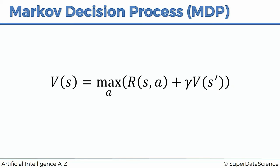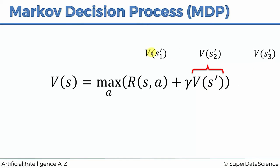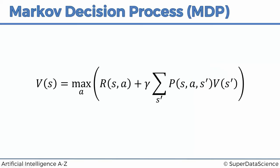Now, because we have some randomness in our whole process, this part will change because we don't actually know which state we'll end up in. We don't know what S prime will be — if we're going up, will it be up, left, or right? So we actually have to replace this with the expected value of the next state. There are three possible states we can end up in. That state has a value of V(S1 prime), that state has V(S2 prime), and this state has V(S3 prime). We're going to multiply the intended state by 80% — our probability of getting there — plus 10% for the left state, plus 10% for the right state. This is just our expected value.